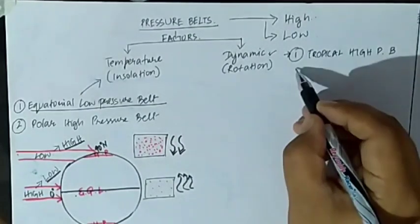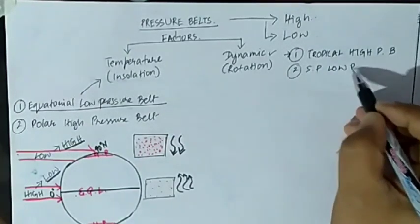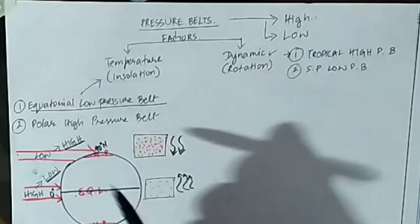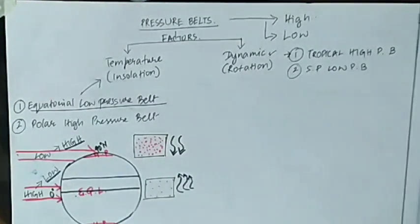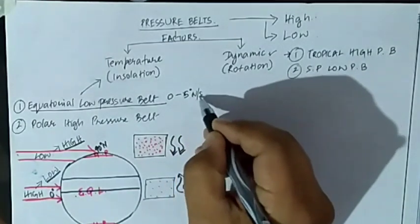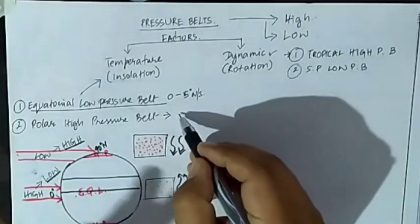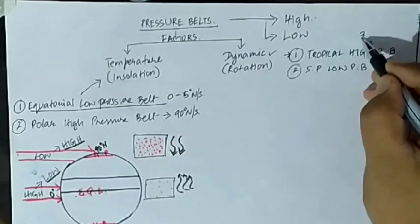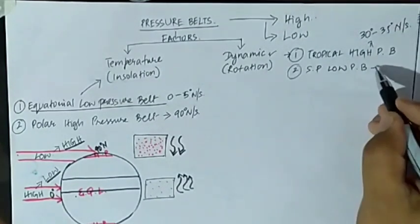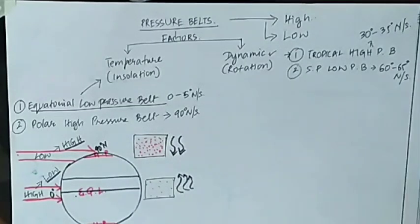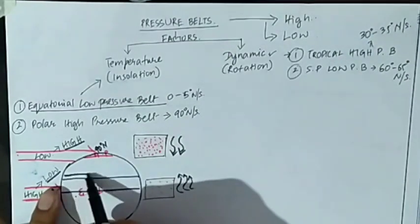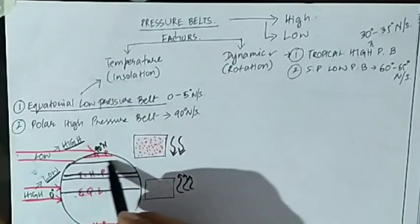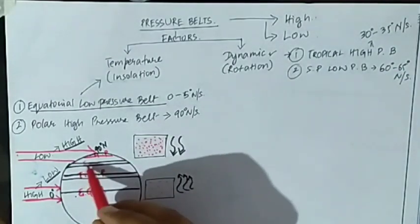The tropical high pressure belt and the subpolar low pressure belt also exist. Regarding the latitudinal locations: the equatorial low pressure belt falls under 0 to 5 degrees north and south latitude; the polar high pressure belt falls under 90 degrees north and south; the tropical high pressure belt lies between 30 to 35 degrees north and south latitude; and the subpolar low pressure belt lies between 60 to 65 degrees north and south latitude. The tropical high pressure belt is just above the equatorial low pressure belt, and between the tropical and polar high pressure belts lies the subpolar low pressure belt.